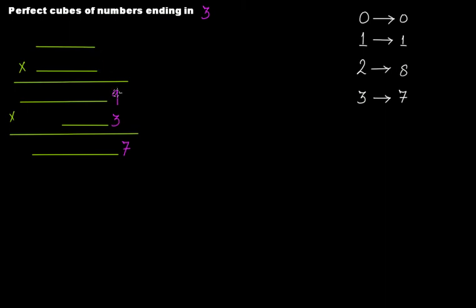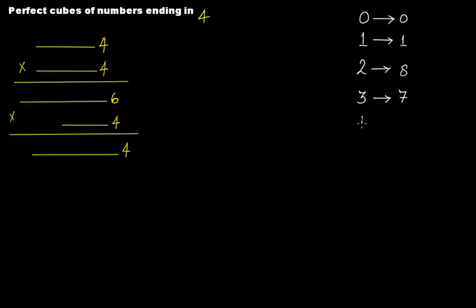If your number ends in 4, then 4 times 4 is 16 — so 6 at the units place and 1 carried over. You then multiply by 4 again: 4 times 6 is 24 — so 4 at the units place and 2 carried over. It means that if your number ends in 4, the perfect cube will also end in 4.